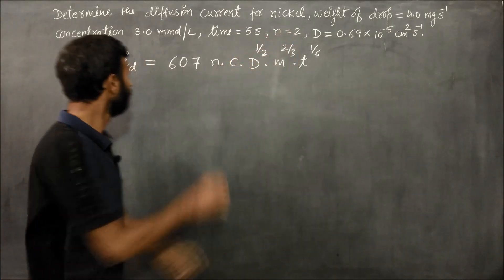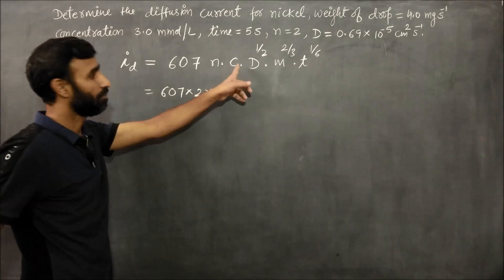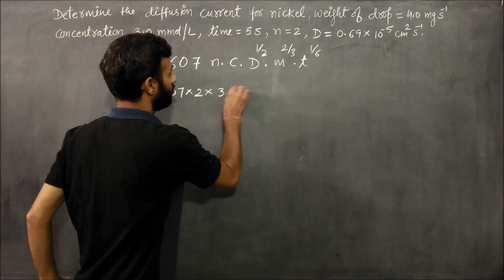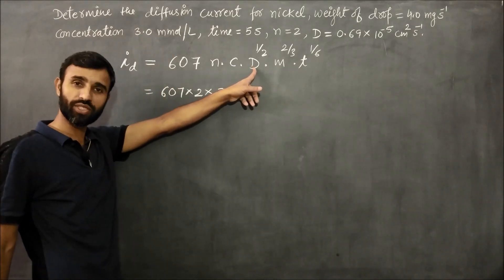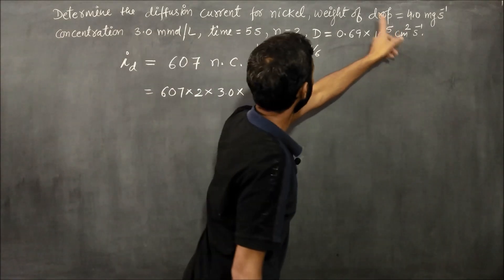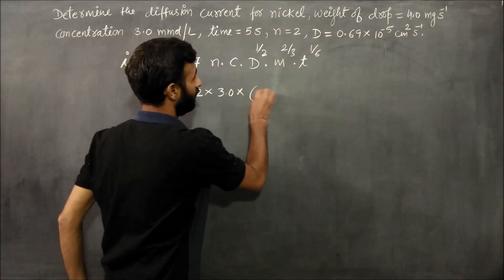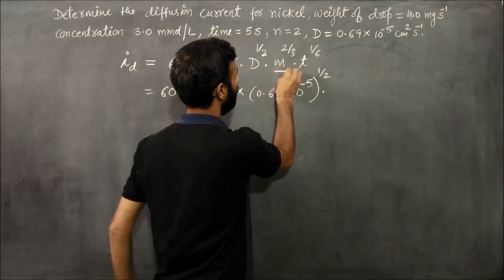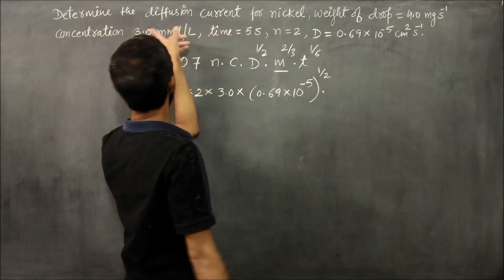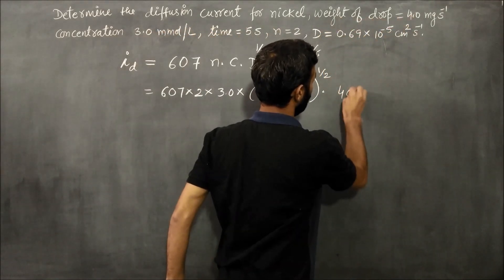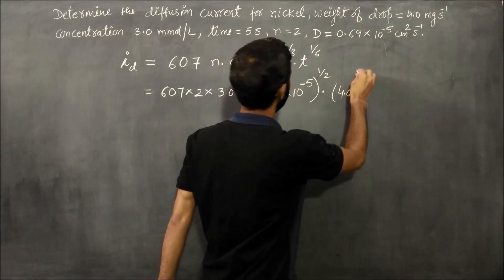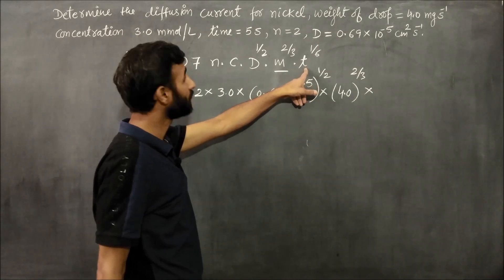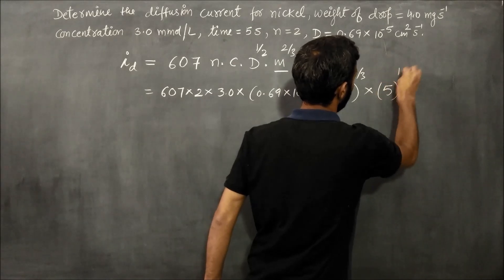Here n is the number of electrons, which is given. c is the bulk concentration of the electroactive species in millimoles per liter, given in millimoles per liter. d is the diffusion coefficient of the electroactive species in centimeter squared per second — write it as 0.69 times 10 raised to power minus 5, raised to power 1/2. m, the mass flow rate, is given as 4.0 milligrams per second, raised to power 2/3, multiplied by the drop lifetime t in seconds, which is 5, raised to power 1/6.